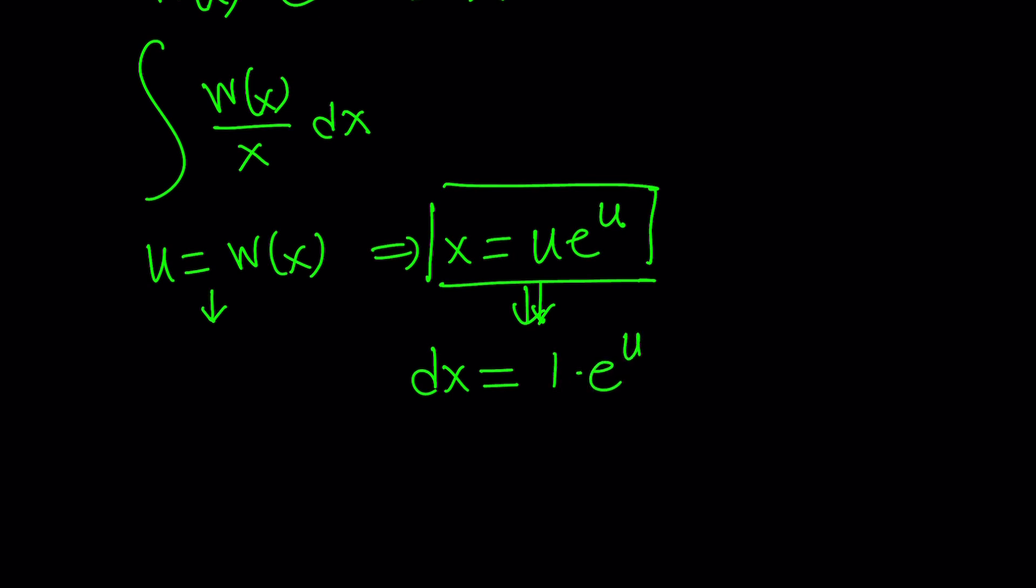Times e to the u, so we're using the product rule, plus the derivative of e to the u, which is e to the u multiplied by the first function, which is u.